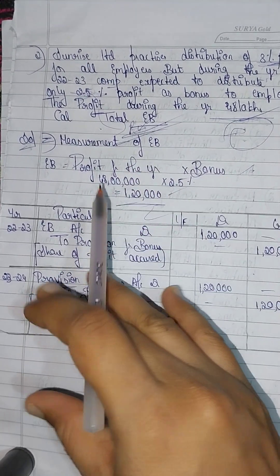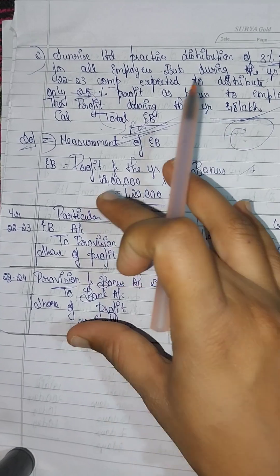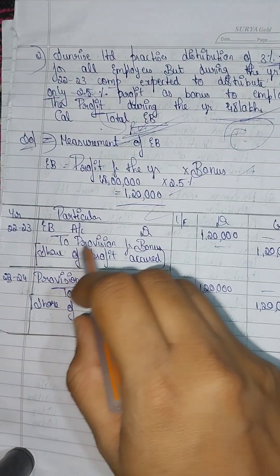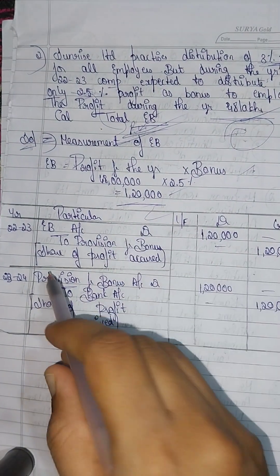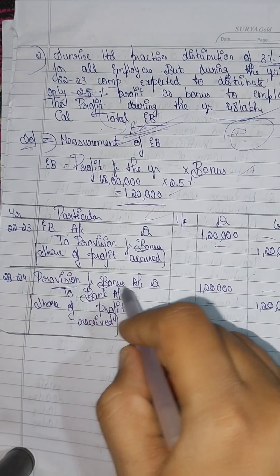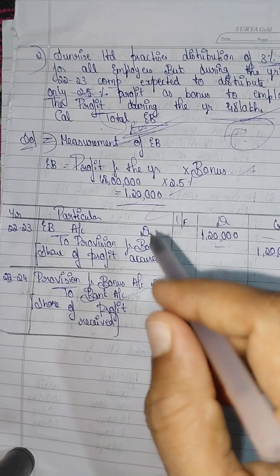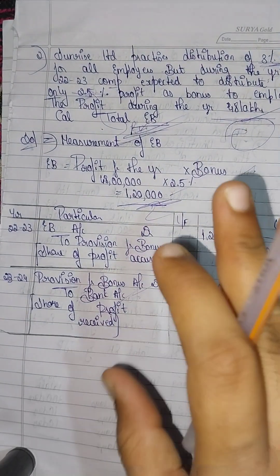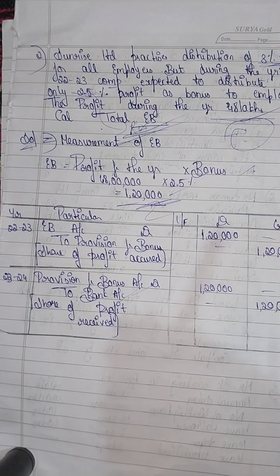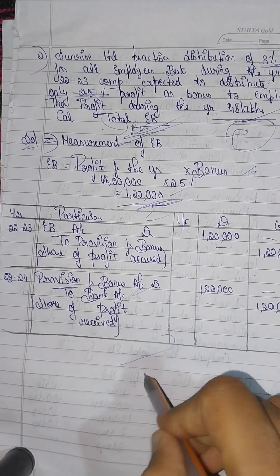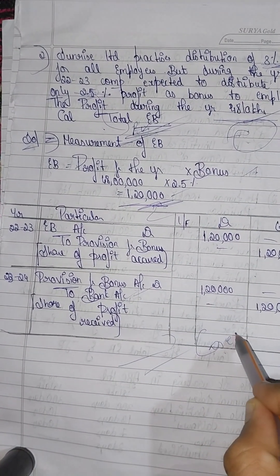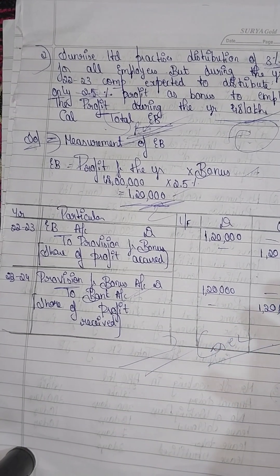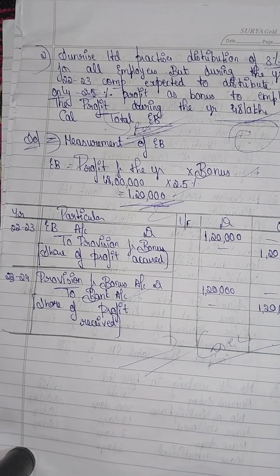The journal entries are the same — Employee Benefit Account debit to Bank Account. You can determine the amount of credit for this extra amount. I will explain bonus Case 2 and all the remaining cases next. Thank you guys, thanks for watching.